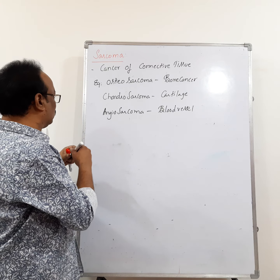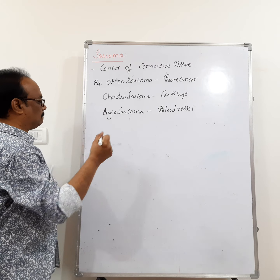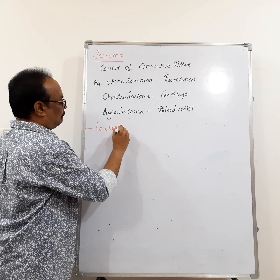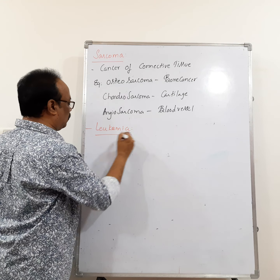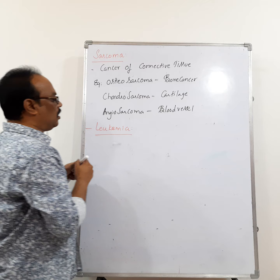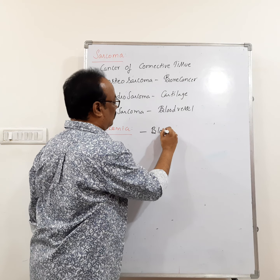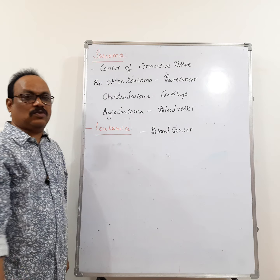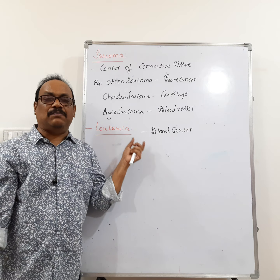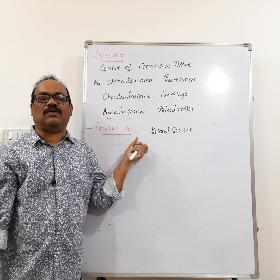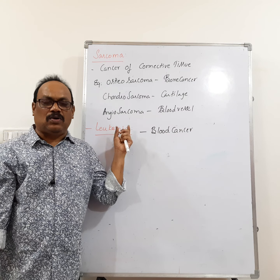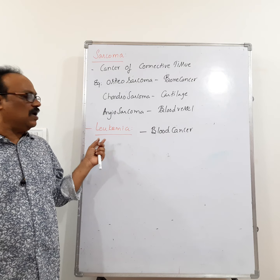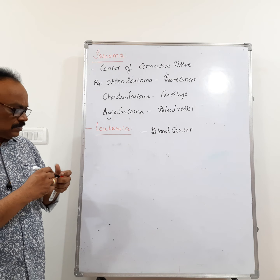The third type is leukemia, which is blood cancer. In leukemia, the white blood cells — leukocytes — are produced in an abnormal number.